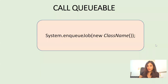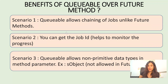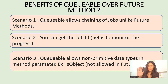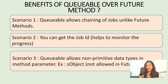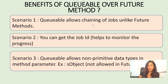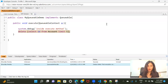Now the main point: why do we actually need Queueable Apex? The first benefit is that it allows chaining of jobs, which is not possible in Future Methods. If you have multiple Future Methods there is no way to sequence them, but with Queueable Apex you can chain jobs and control the order of execution.